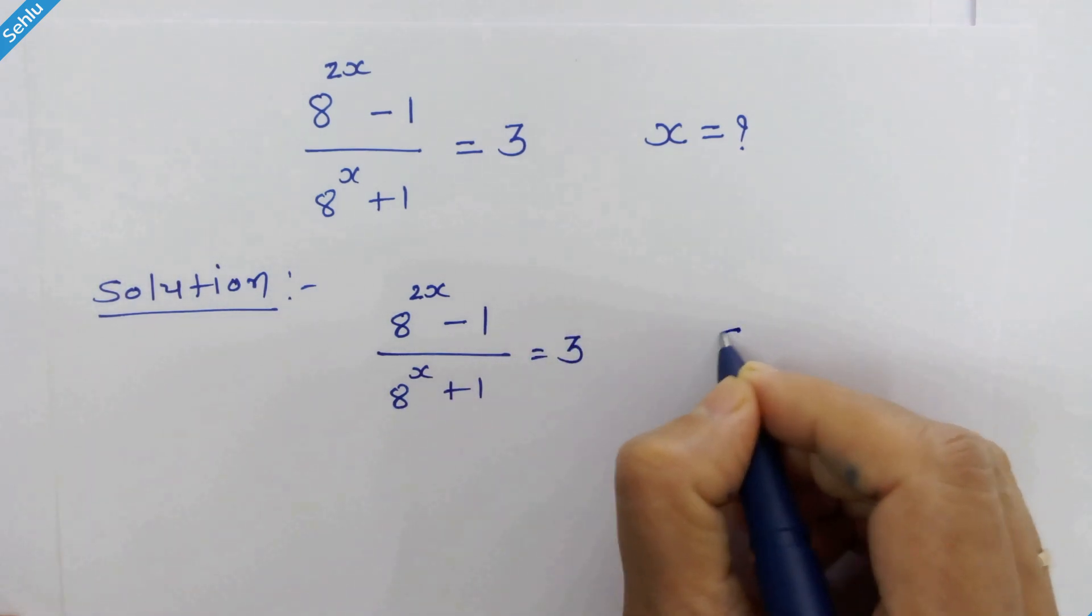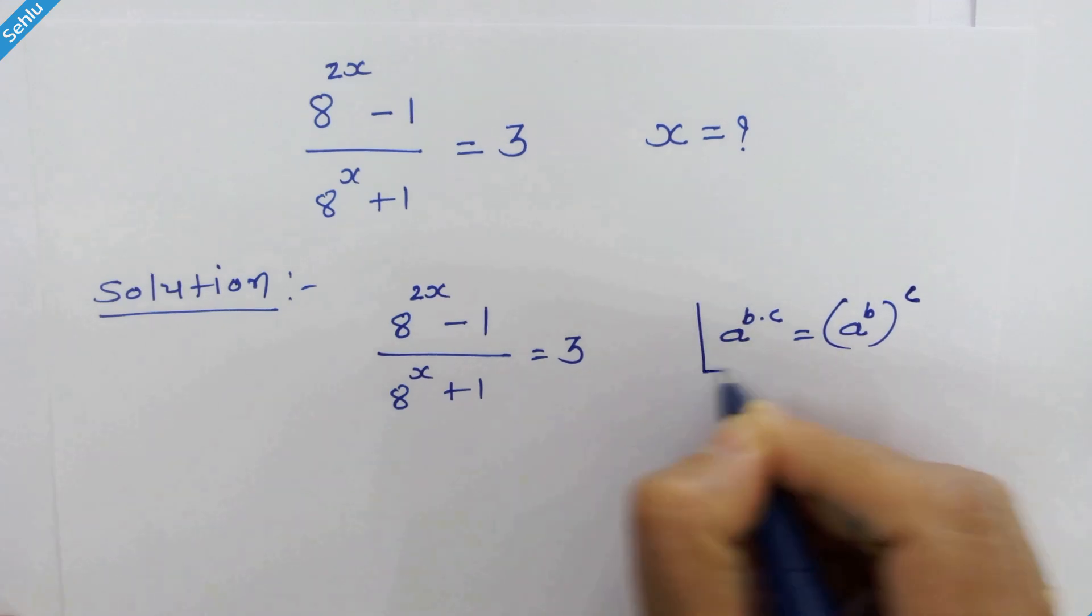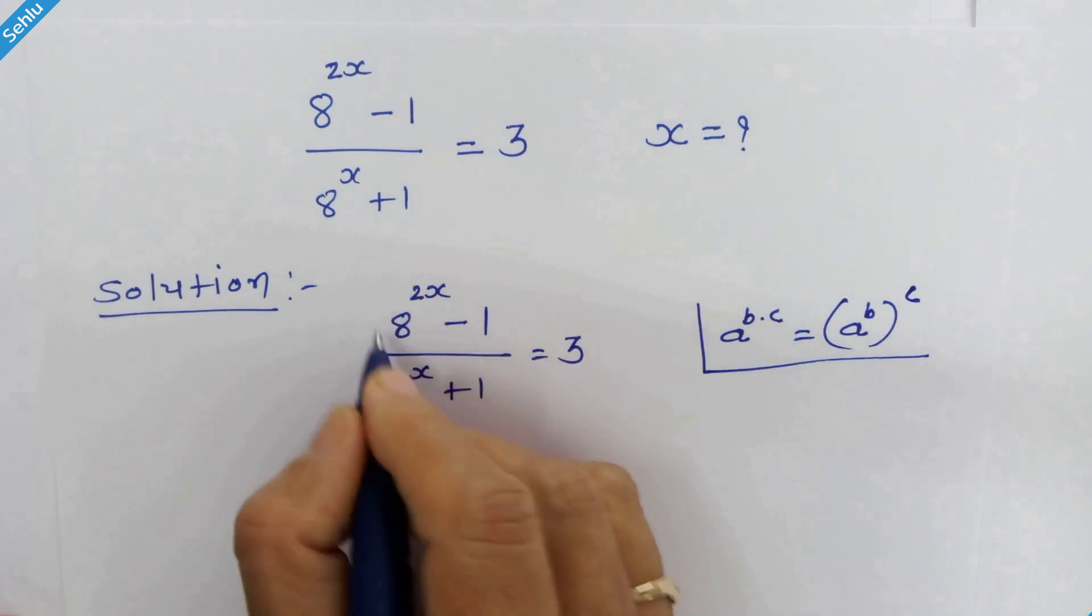As you know, if we have a raised to b times c, then it will be a raised to b whole raised to c. And we will apply this rule here.